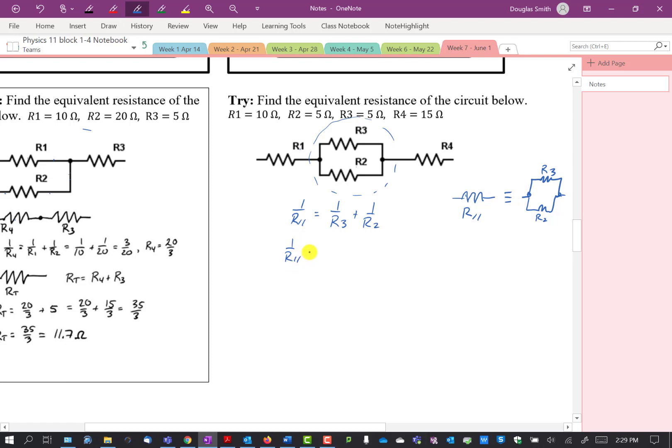So 1 over R parallel is, R3 is 1 over 5, 2 is 1 over 5. So that's 2 fifths. So R parallel is 5 over 2.